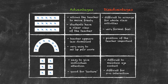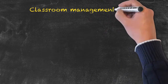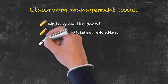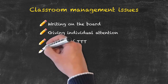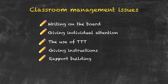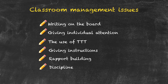So far we've talked about the use of the eyes, voice and gesture to help manage the classroom. We've also looked at the actual classroom arrangement in terms of the physical space and material. There are some other classroom management issues we need to consider: writing on the board, giving students individual attention, the use of teacher talk time, the way in which we should give instructions to students, building and maintaining rapport, and finally the issue of classroom discipline.